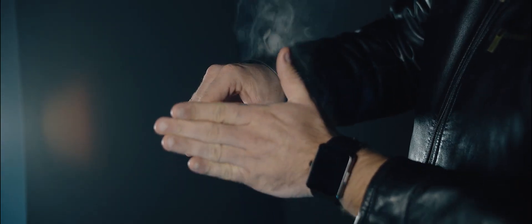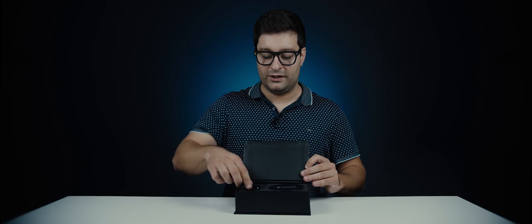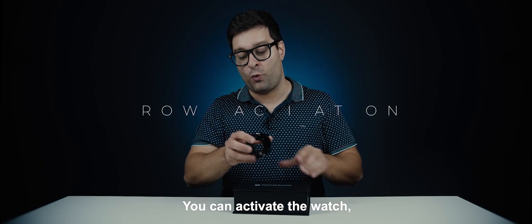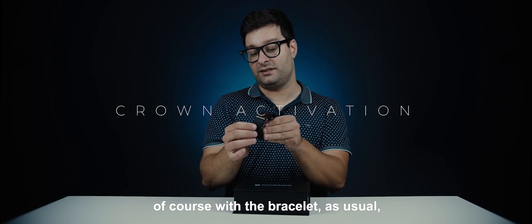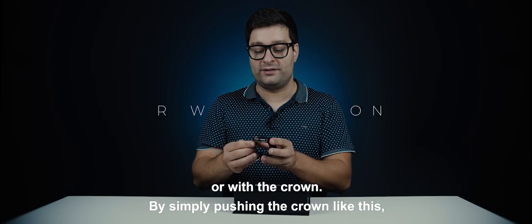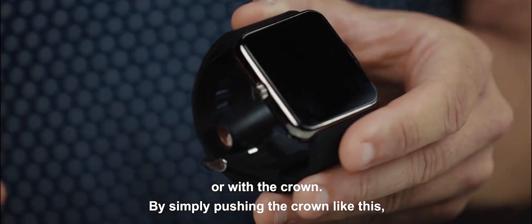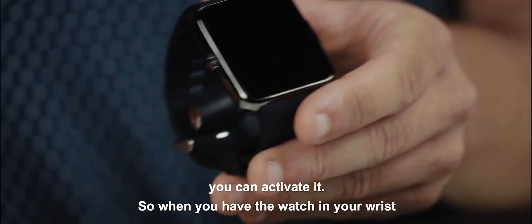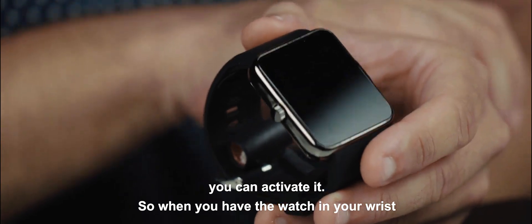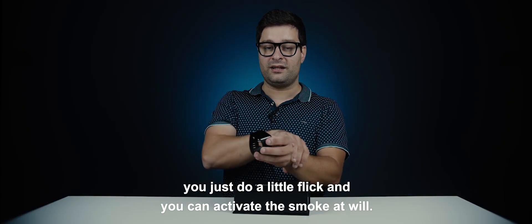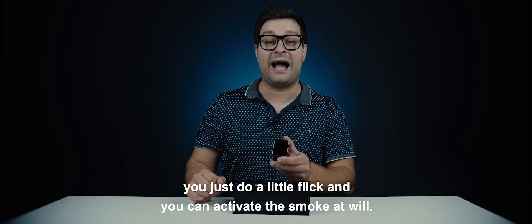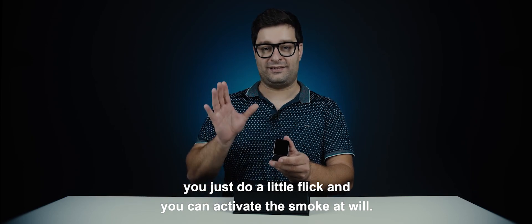You can activate the watch of course with the bracelet as usual, or with the crown by simply pushing the crown like this. When you have the watch on your wrist, you just do a little flick and you can activate the smoke at will.